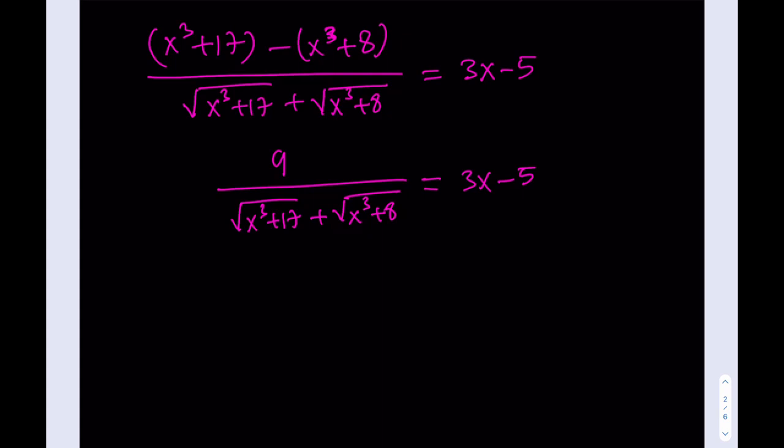The top actually simplifies nicely. This is why we are multiplying by the conjugate, because we get a constant. So, that's going to be 9, nice, divided by the square root of x cubed plus 17, plus the square root of x cubed plus 8. Awesome. So, this is much nicer. A lot of times we try to rationalize denominator. We don't want radicals. But here, we do want a radical in the denominator, and I'll tell you why.